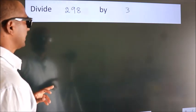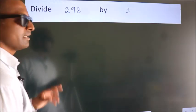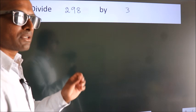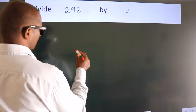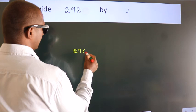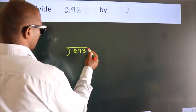Divide 298 by 3. To do this division, we should frame it in this way. 298 here, 3 here.